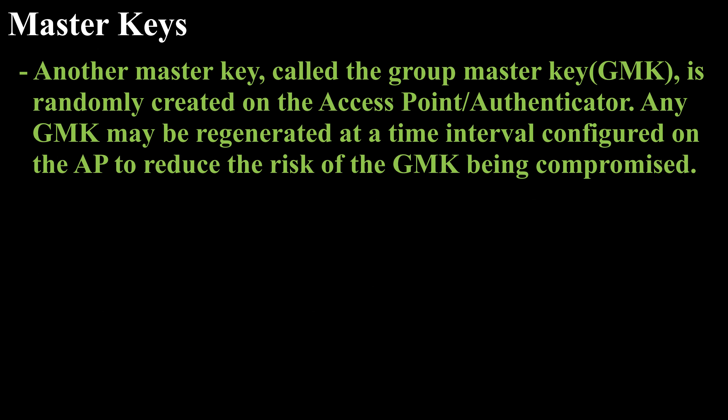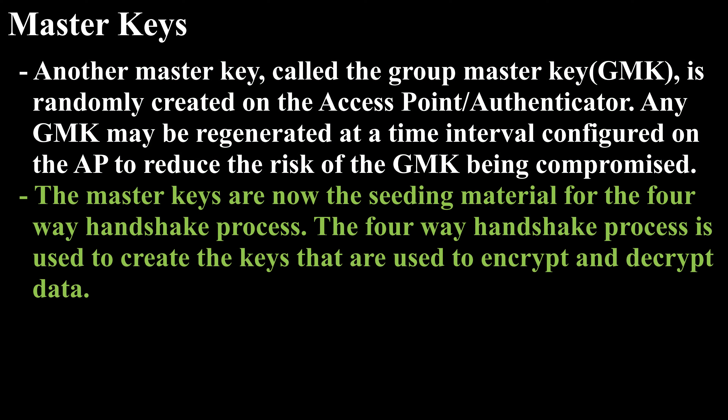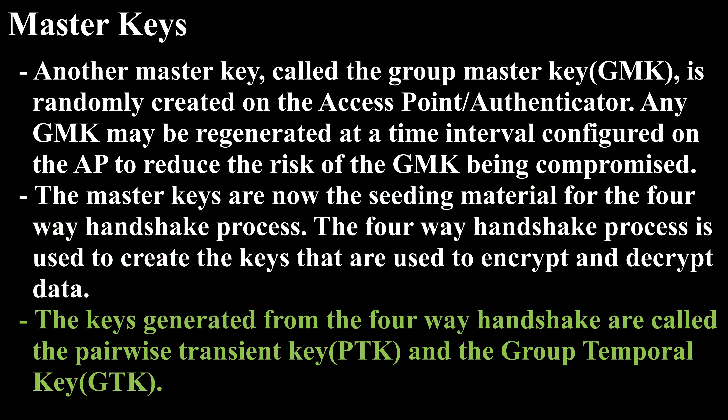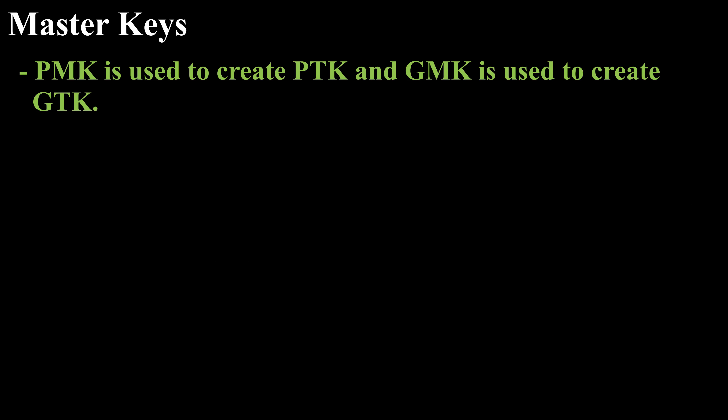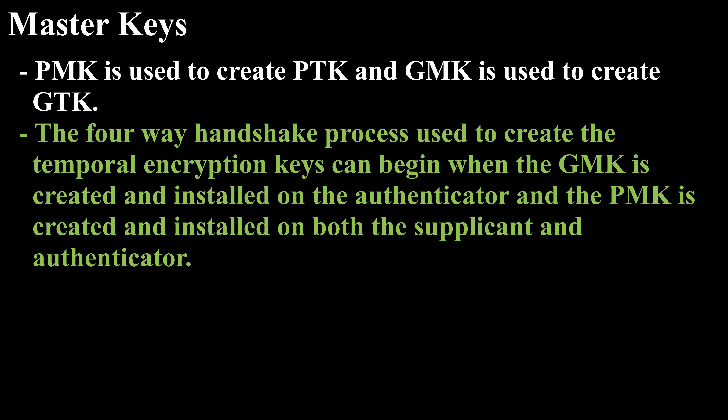Another master key, the Group Master Key (GMK), is randomly created on the access point or authenticator. Any GMK may be regenerated at a configured time interval to reduce the risk of compromise. The master keys are the seeding material for the four-way handshake process, which creates the keys used to encrypt and decrypt data. The keys generated from the four-way handshake are the Pairwise Transient Key (PTK) and the Group Temporal Key (GTK). PMK is used to create PTK, and GMK is used to create GTK.